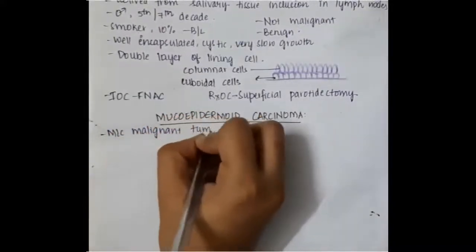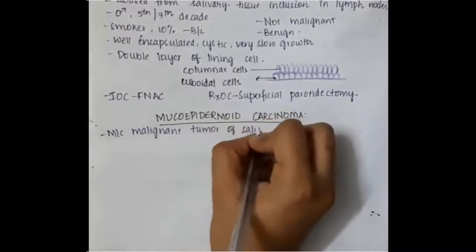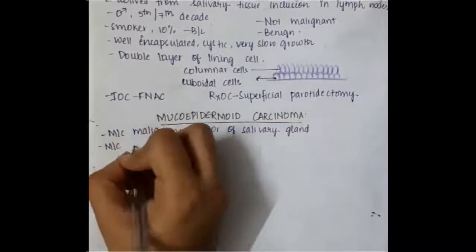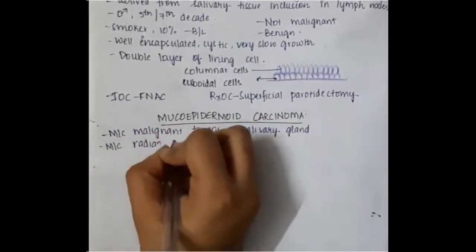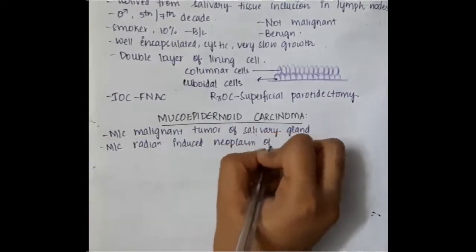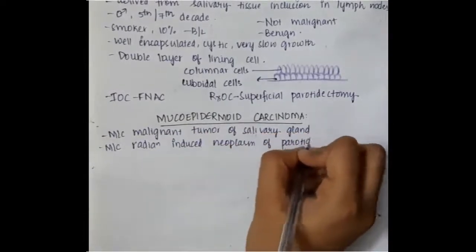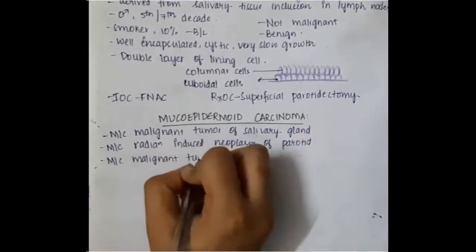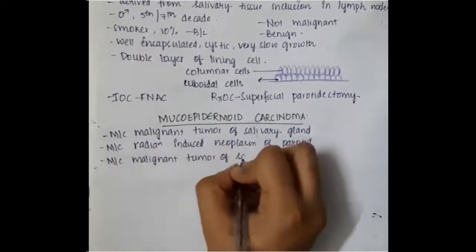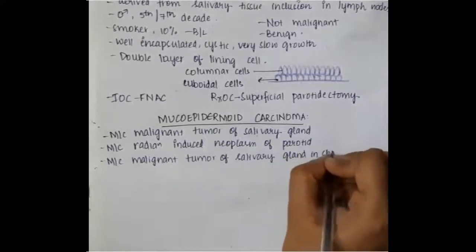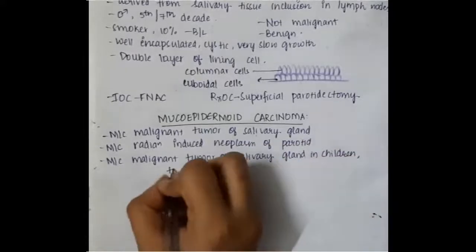Mucoepidermoid carcinoma is the most common malignant tumor of the salivary gland. It is also the most common tumor associated with radiation and the most common malignant salivary gland tumor in children.